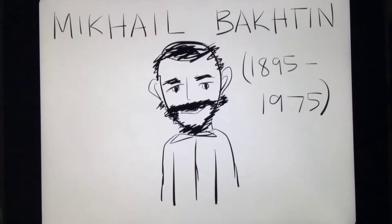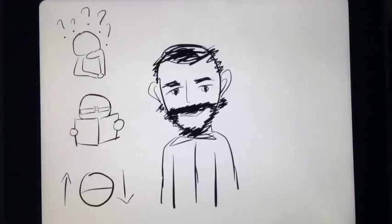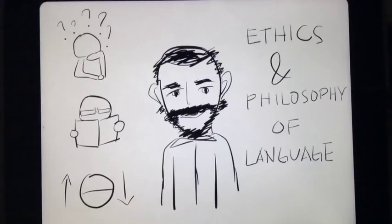Mikhail Mikhailovich Bakhtin was a 20th century Russian philosopher, literary critic, and semiotician who worked on the ethics and philosophy of language, as well as different literary theories.